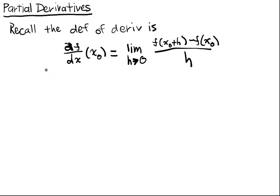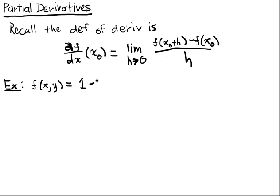The first thing we're going to consider is what happens when we fix slices of a multivariate function. For example, let's consider the function f(x, y) = 1 - x² - y². It's a simple function — it looks like a parabolic hill.